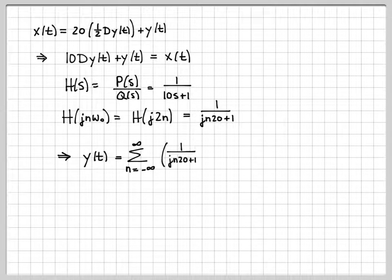So as we continue this, that means I can write y(t). Now that we know that missing piece, here was the missing piece, H(jn·ω₀). We now know that that's this complex number, 1/(jn·20 + 1).